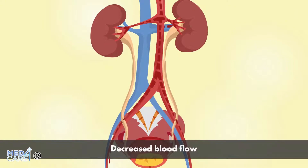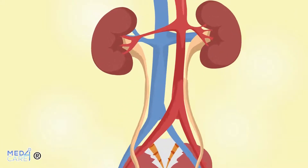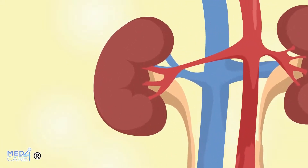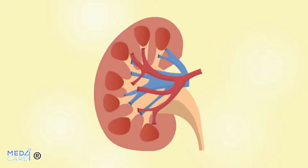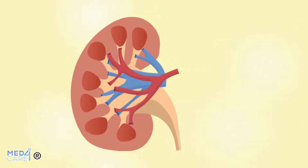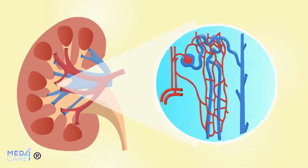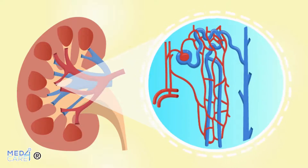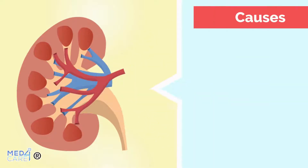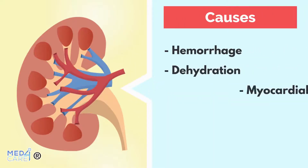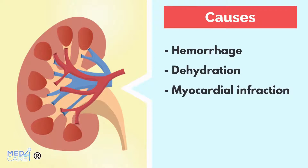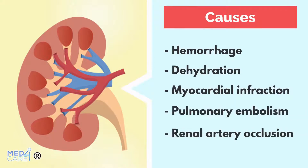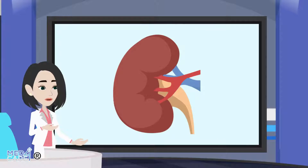Pre-renal causes result in decreased blood flow to the kidneys. The reduction in blood flow to the kidney results in a large absorption of water and salts and a consequent reduction in the amount of urine. Upstream there may be multiple causes such as hemorrhage, dehydration, myocardial infarction, pulmonary embolism, and renal vein occlusion.